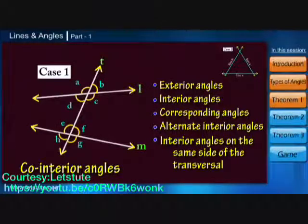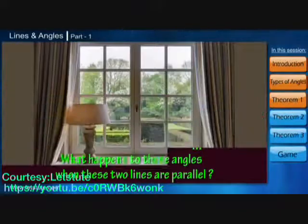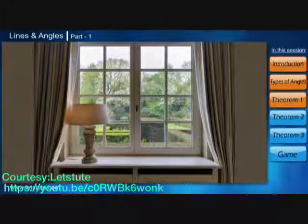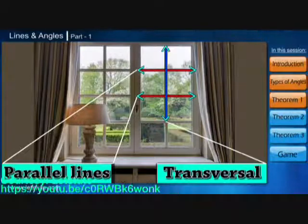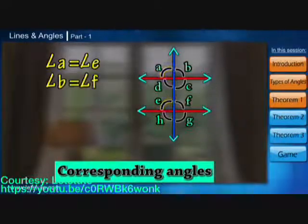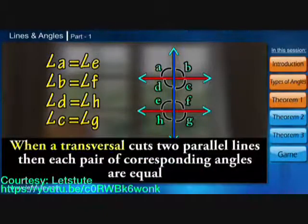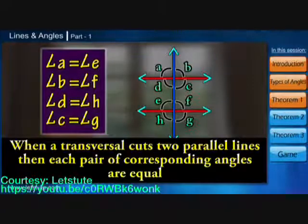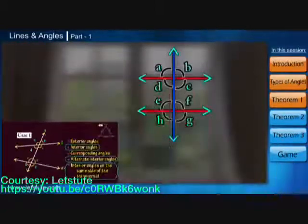What happens to these angles when the two lines are parallel? Let's look at the window — we can see two parallel lines with a transversal passing through them. All pairs of corresponding angles will be equal to each other. We can conclude that when a transversal cuts two parallel lines, each pair of corresponding angles is equal. Now let's look at the alternate interior angles.